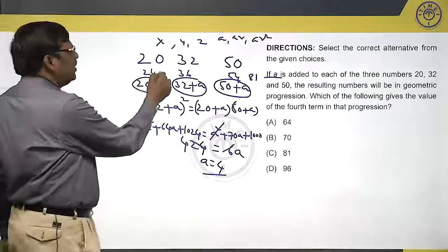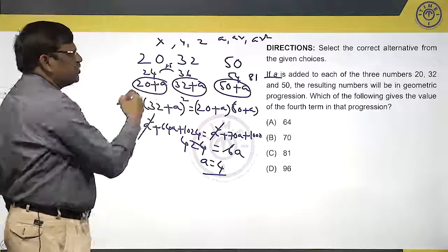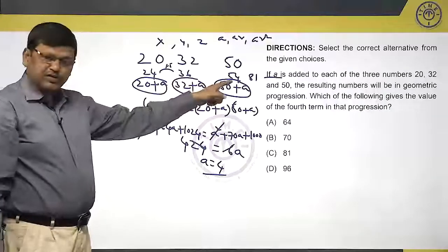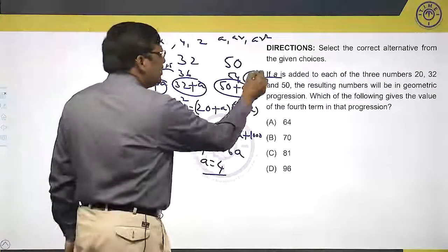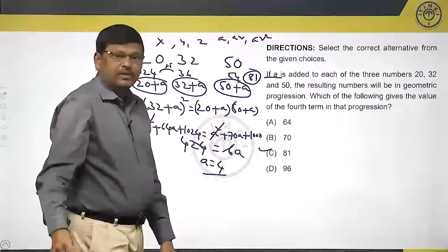This is 1.5 times. Or the ratio is 2 is to 3. 36 is to 54, 2 is to 3. This also should be in the ratio of 2 is to 3. Hence, my answer should be 81. Thank you.